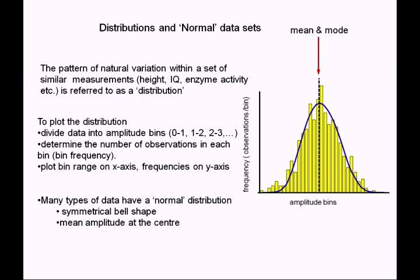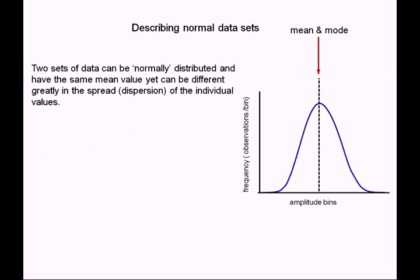If we know our data is normally distributed and we know the mean, that tells us quite a lot, but we need to know more. We can have two sets of data that are both normally distributed with the same mean and mode but differ in how the data are spread. The green line shows another distribution with the same mean and mode as the blue one, but it's not as spread out — it has lower dispersion, with data more clustered around the mean.